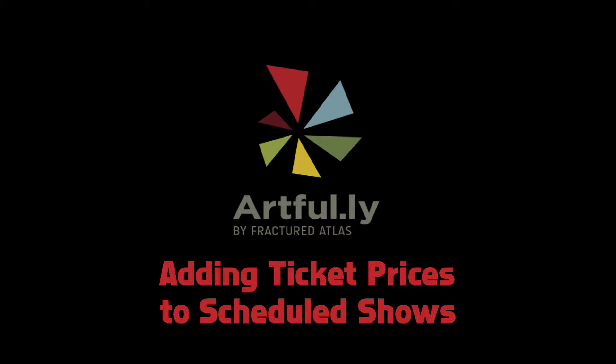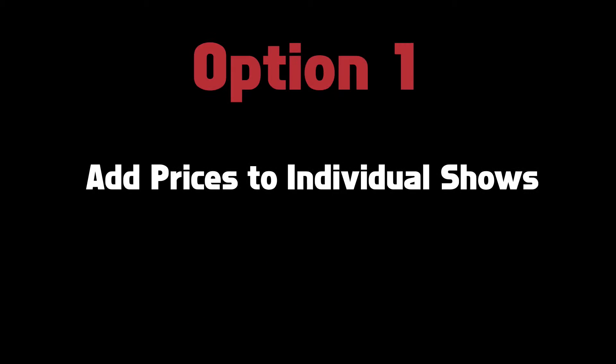If you've scheduled shows without prices in them and want to add them afterwards, it's a simple process. There are two ways to do it. The first is to add the prices directly to the shows you've scheduled on the calendar. If you only have a few performances scheduled, this is probably the best option.